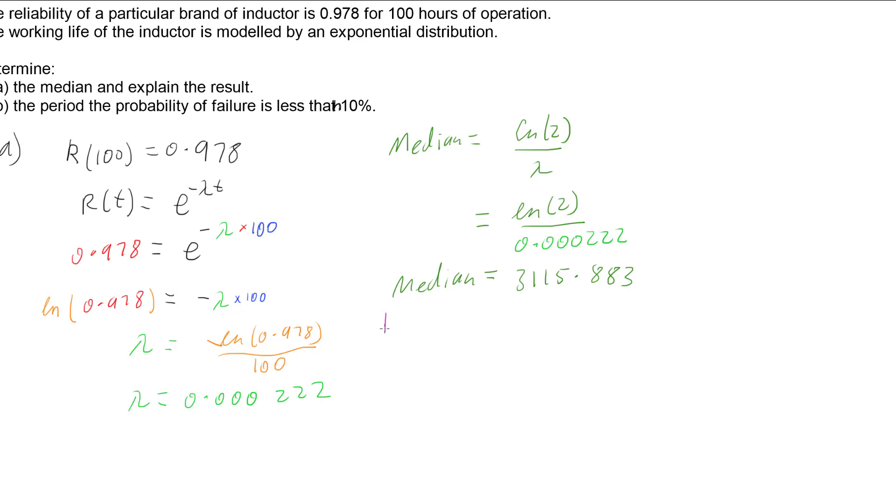What does that mean? Well, the median, because this is in time, is about 3,116 hours, because we've got hours as our units up here. And so at least 50%, because the median is halfway, which is 50% of these inductors will work for that time. So what it means is that at least 50% will last for that number.